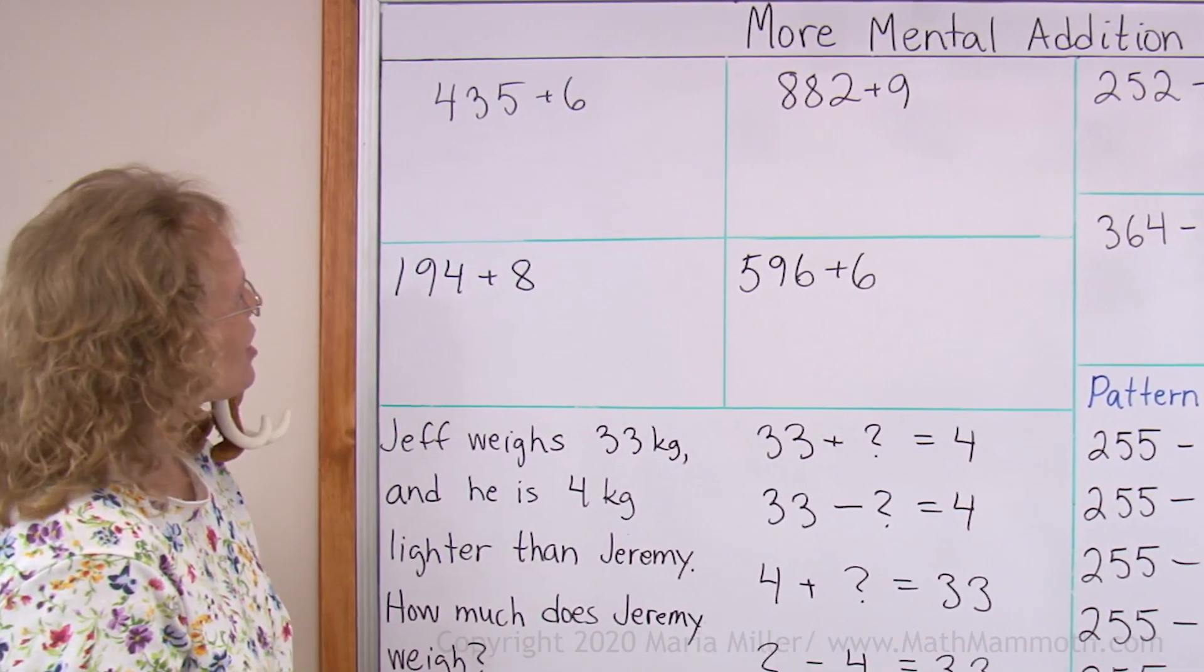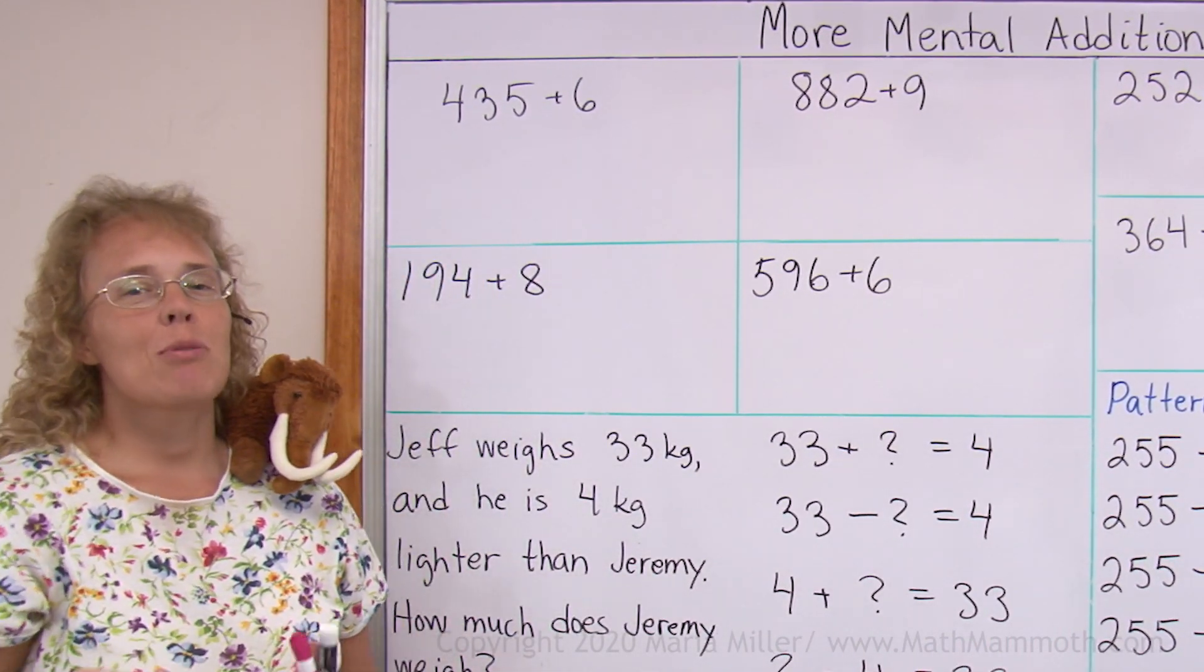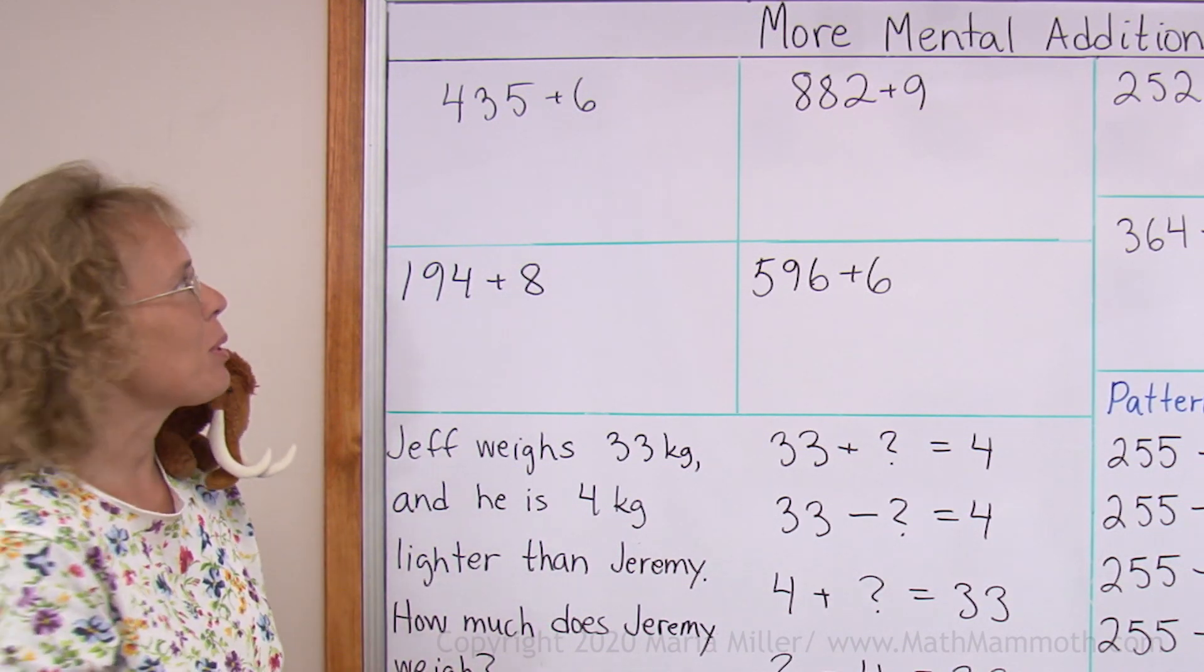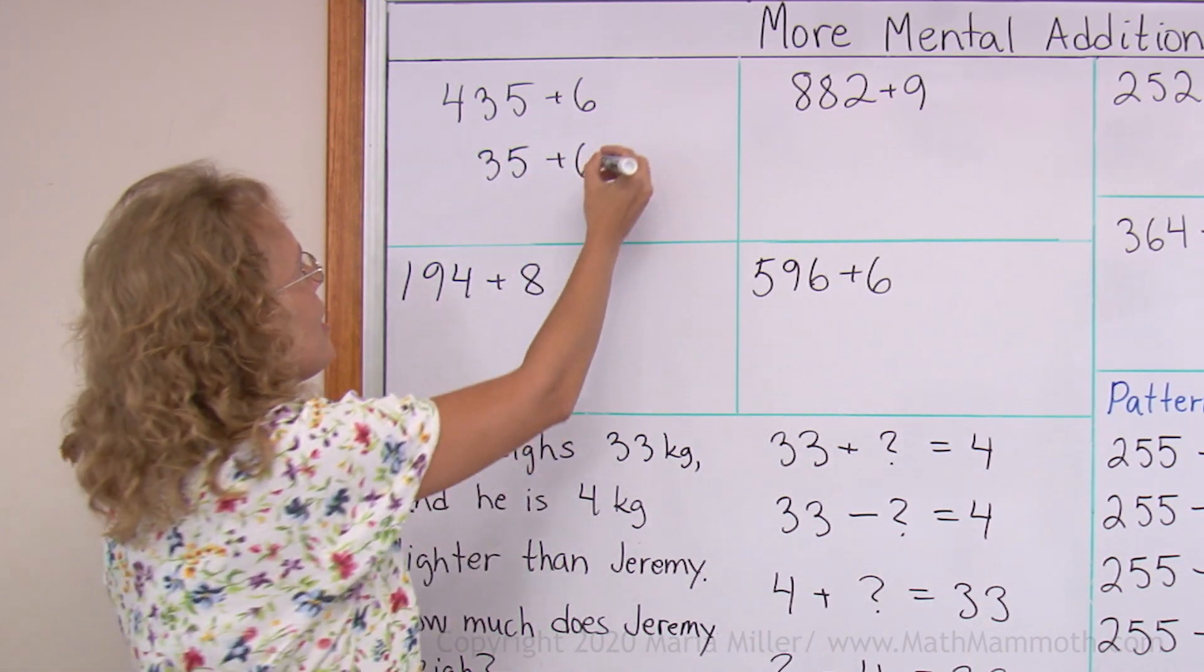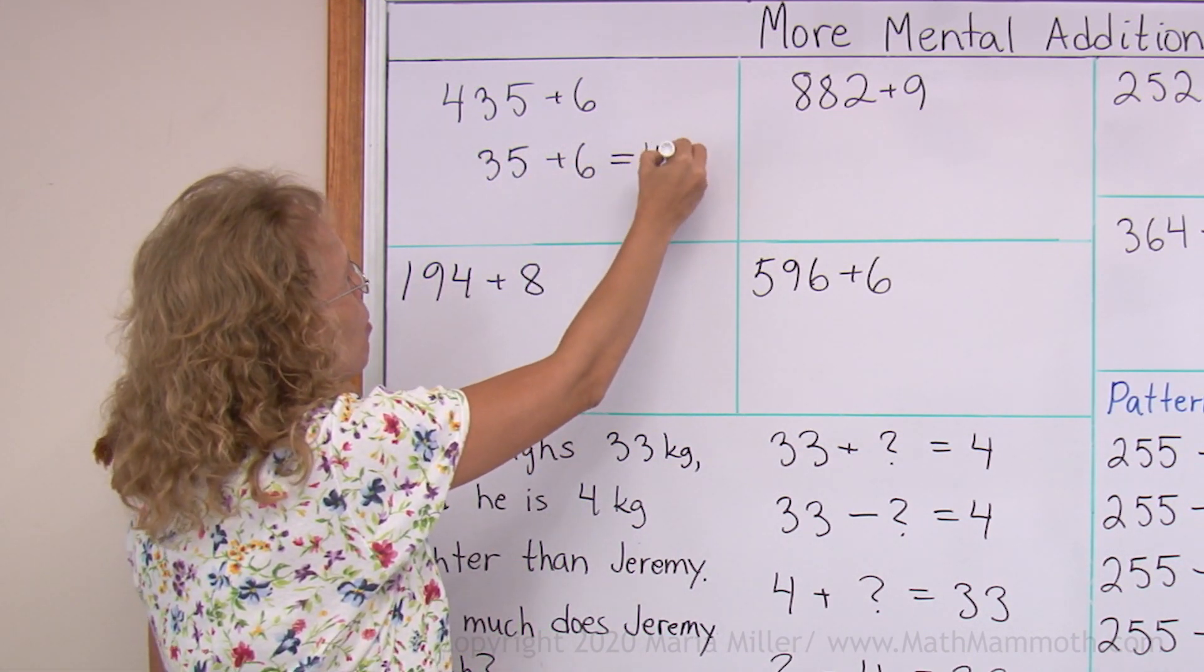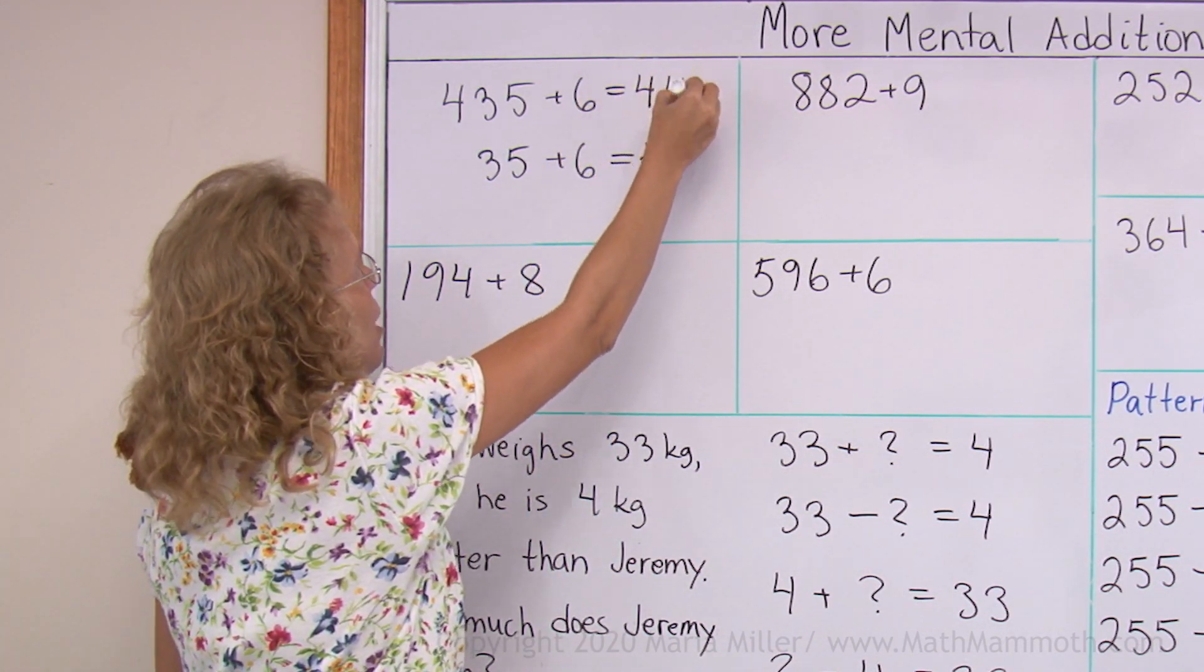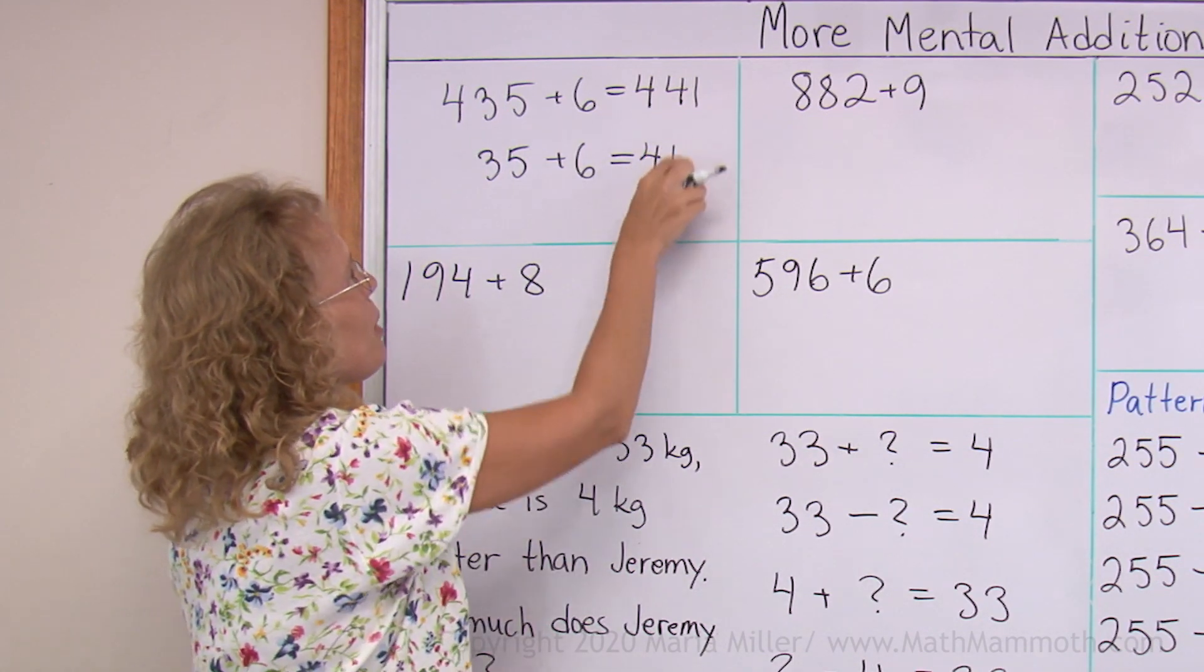My first example here is 435 plus 6. Basically what we will do is we will think of 35 plus 6. That's a helping problem. So you just solve 35 plus 6. And now that is, as you should know, 41. So then this one is just 441, it just has the 400 there. So that's the only difference between these two.